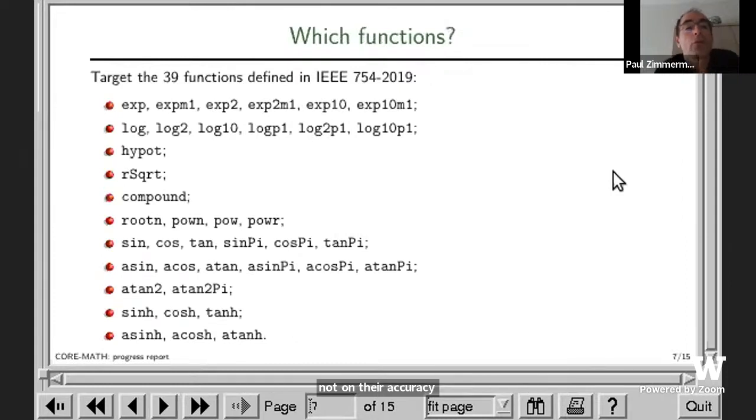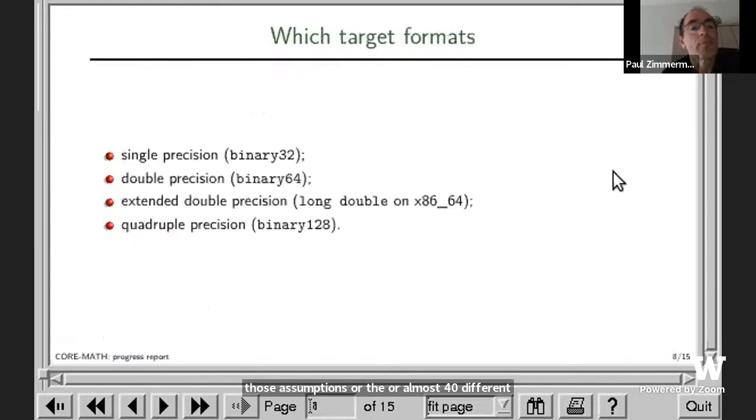Which functions do we target in CORE-MATH? We target all the functions defined in the IEEE standard, which are almost 40 different functions. We target formats including single and double precision. Later we will also target the extended double precision format, which is long double in the C language, at least on x86-64, and also we target quadruple precision.